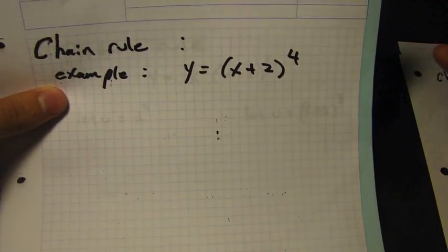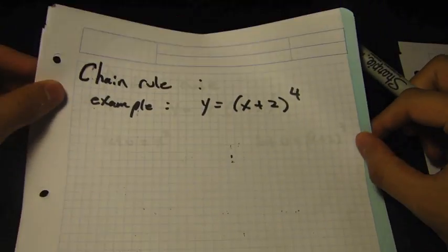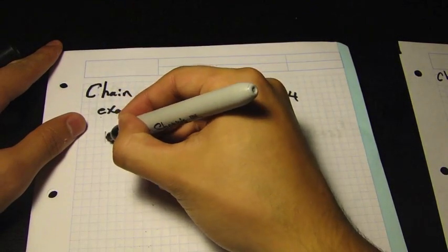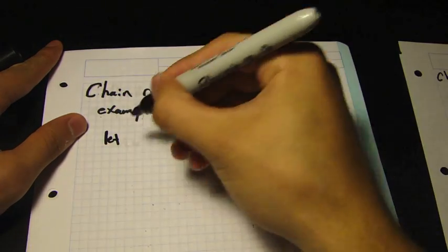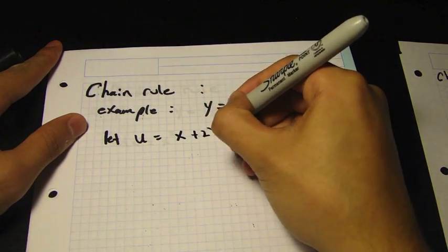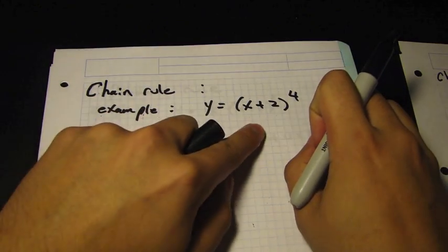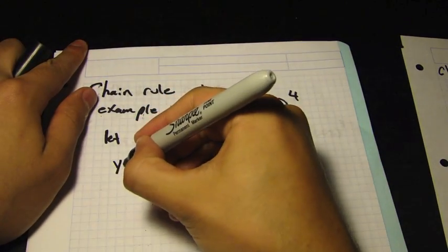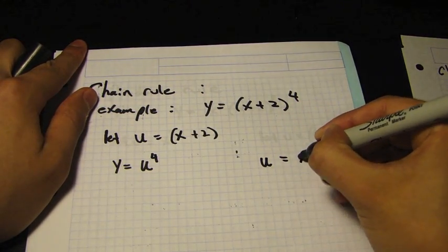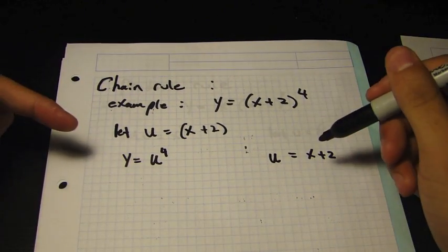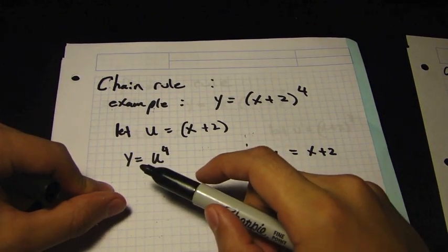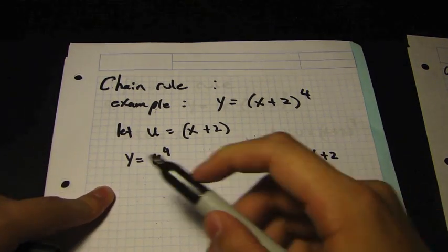Example question: y equals (x + 2) to the power of 4. The first thing we want to do is let u equal x + 2. So we end up with y equals u to the power of 4, and u equals x + 2. Now all you have to do is differentiate these separately — this gives us dy/du, and this gives us du/dx.